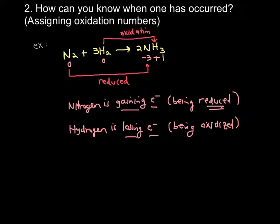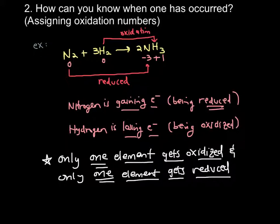You need to remember that when you're looking at these equations to determine what's being oxidized and what's being reduced, only one element is going to get oxidized and only one element is going to get reduced. You're never going to have two elements getting oxidized while one gets reduced. It's only one gets oxidized, one gets reduced. That's helpful to know because if you write your oxidation numbers and see two elements getting reduced, you know you've done something wrong.